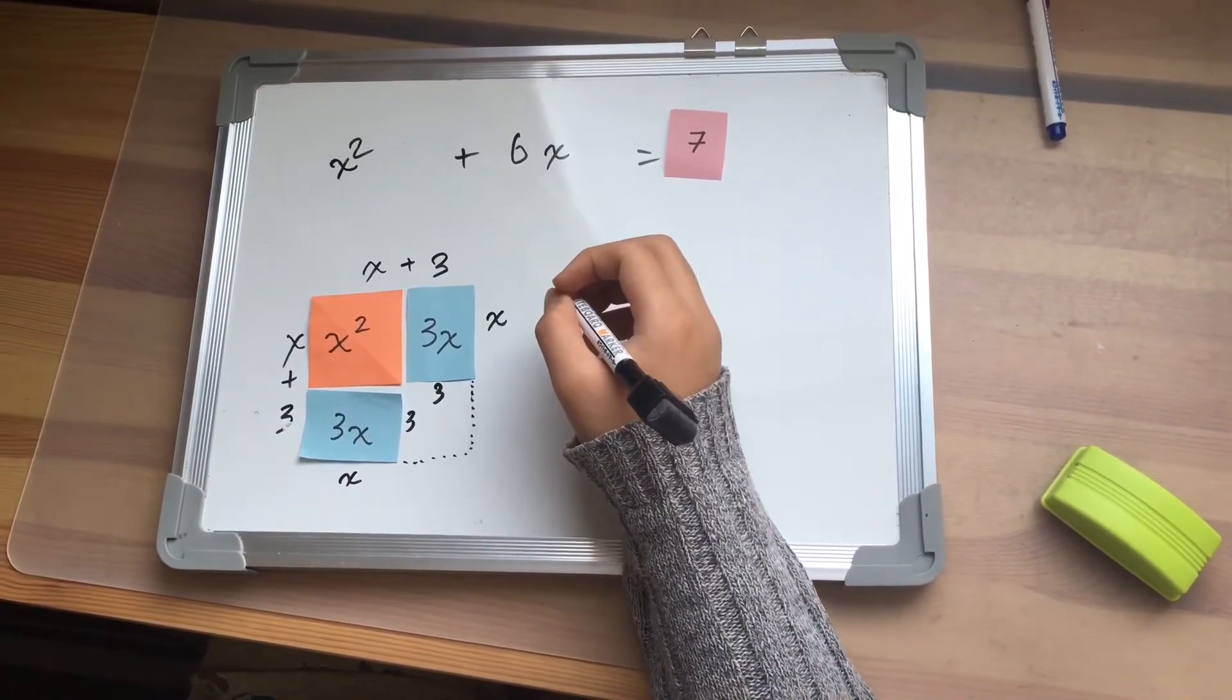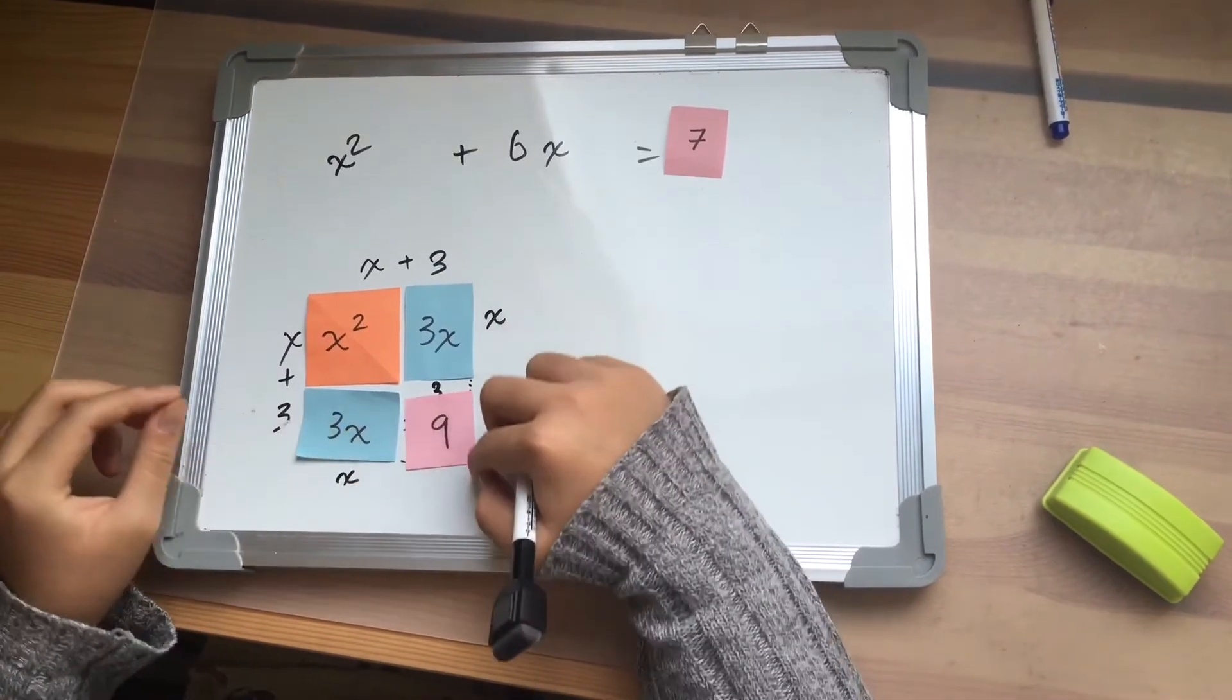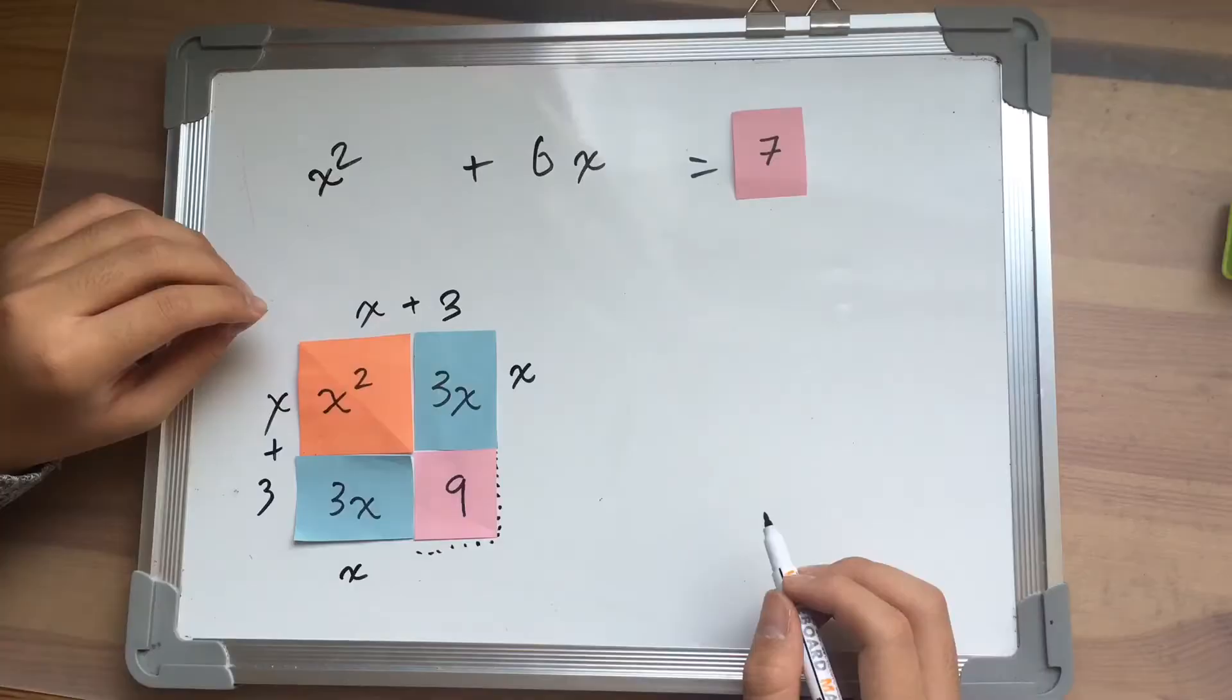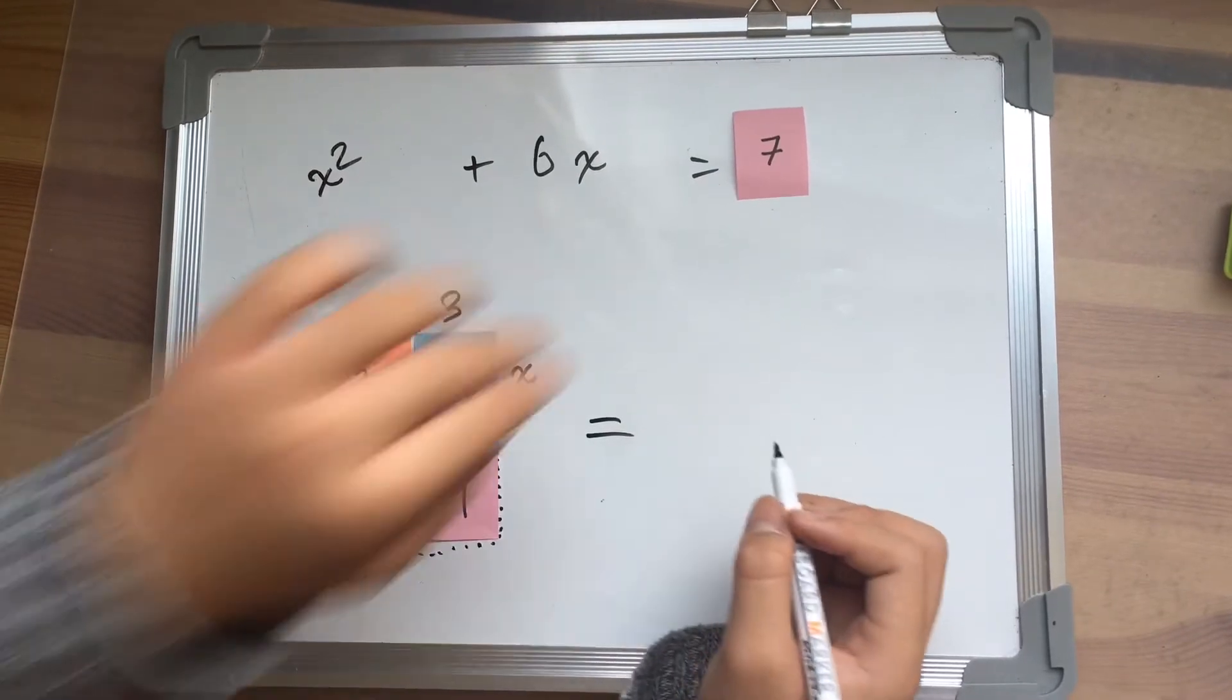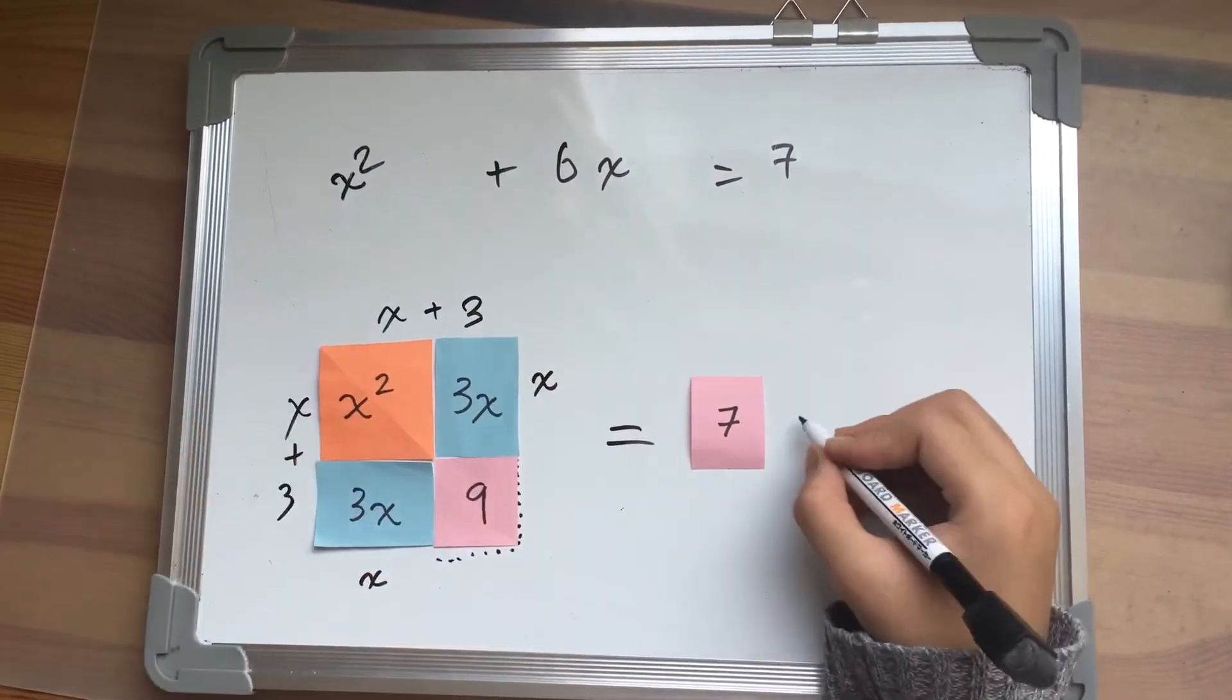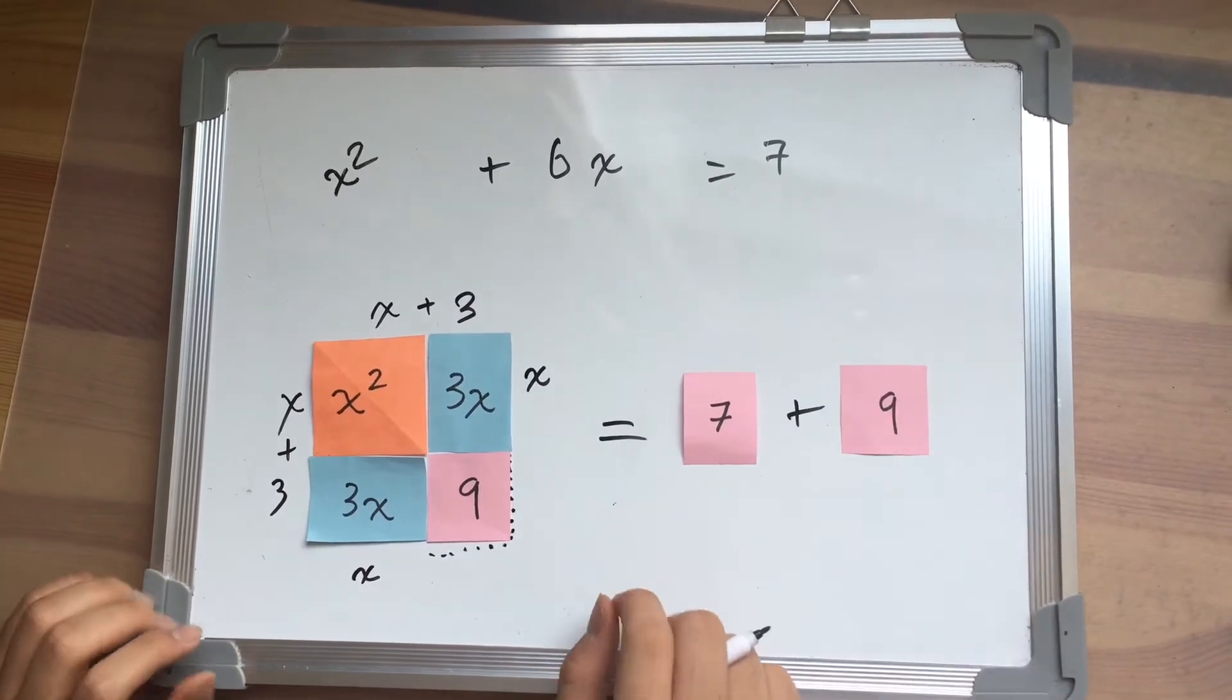The area will be 9. Since I add 9 to the left side of the equation, I have to add 9 to the right side of the equation as well.